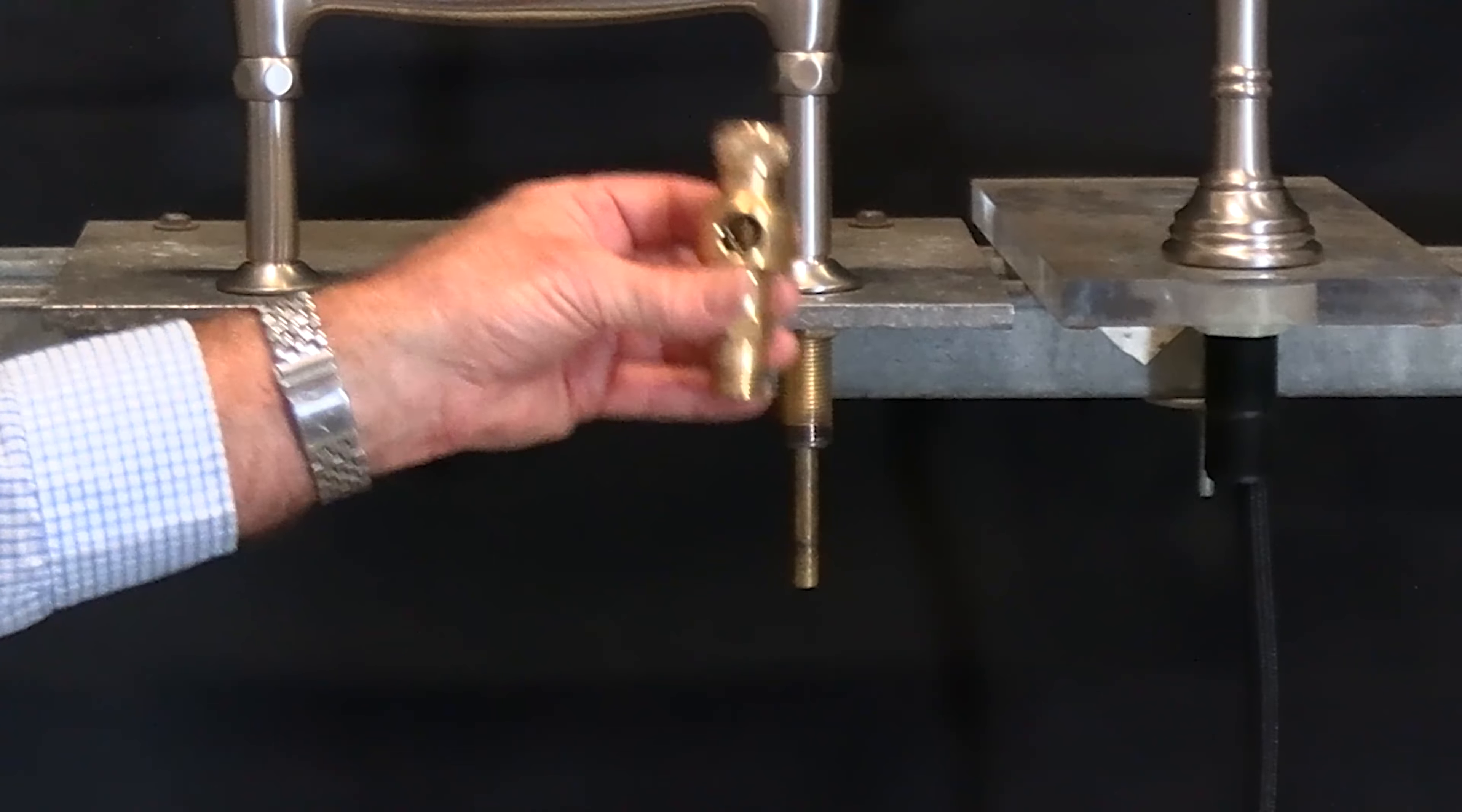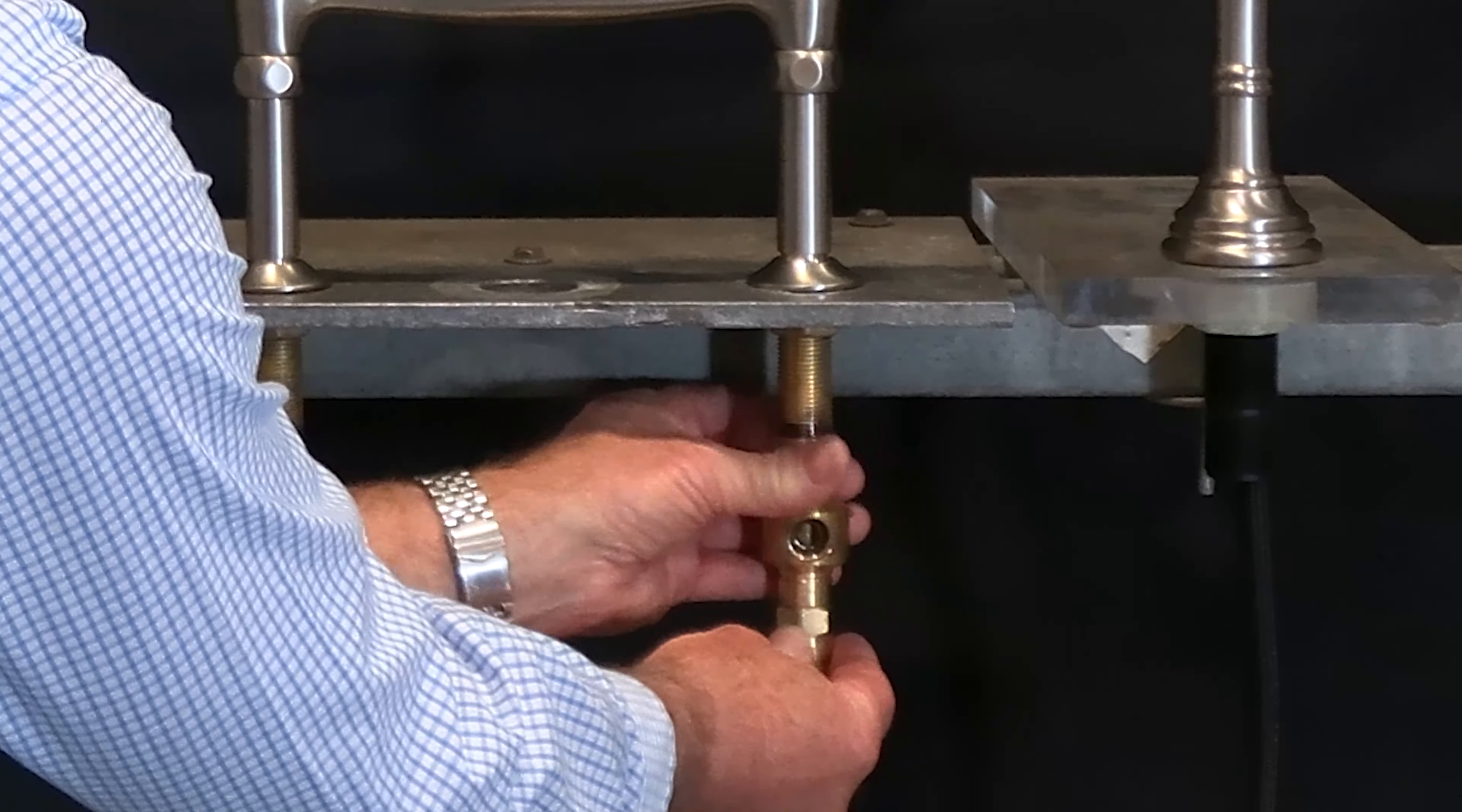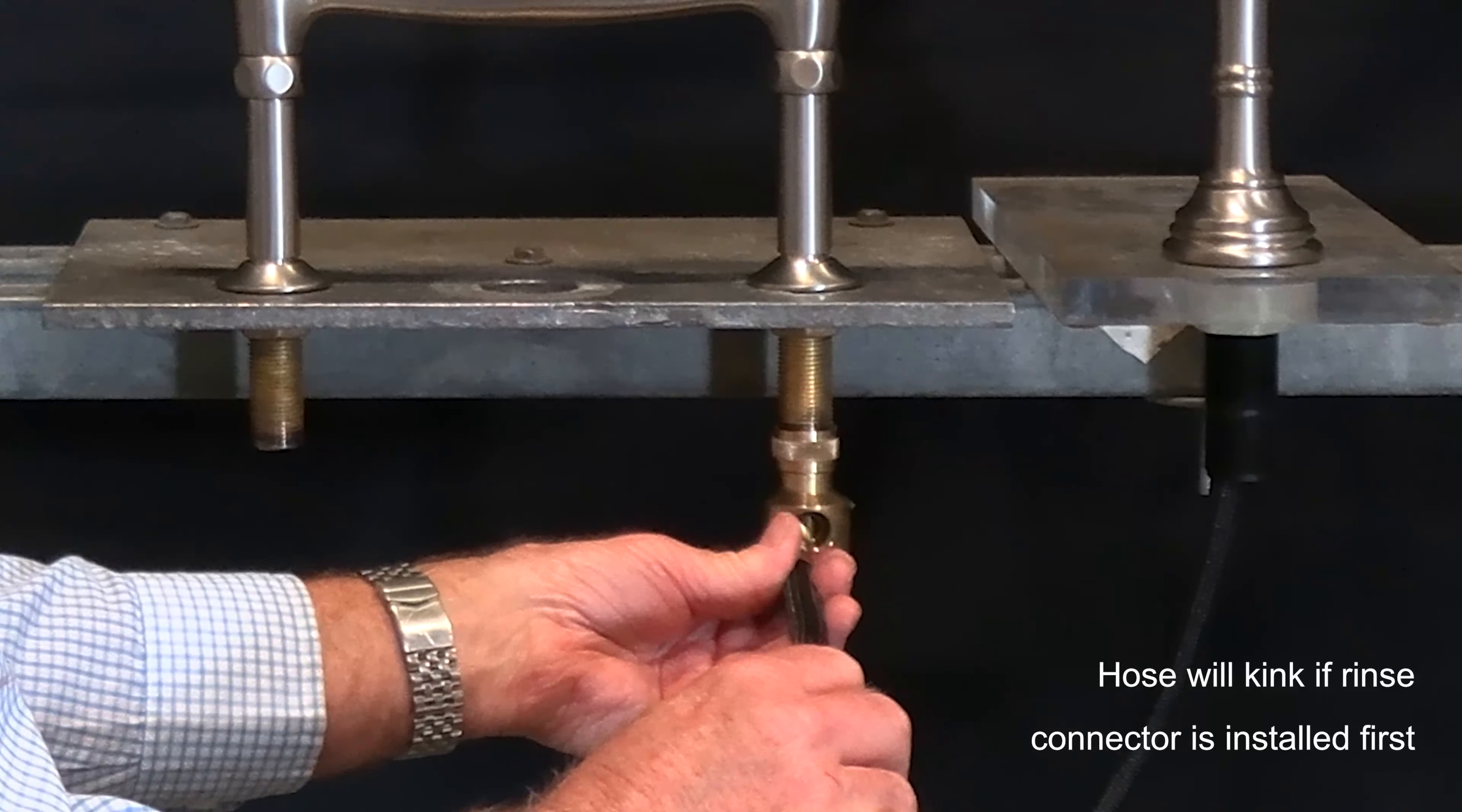The third thing that you need to know and probably the most important as far as the installation sequence goes. This rinse connector fits over the cold side union and this is the most common mistake by most installers.